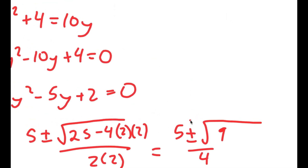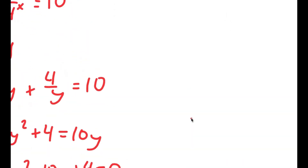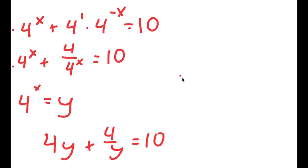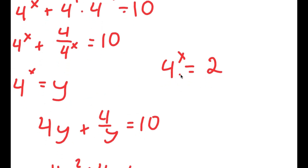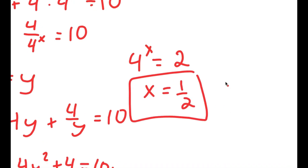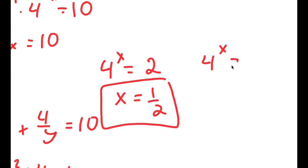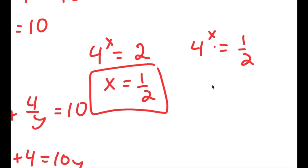So I have y equals 2 and y equals one half. Remember we let 4 to the power of x equal y. So first, 4 to the power of x equals 2, which means x equals one half. And then 4 to the power of x equals one half, which means x equals negative one half.